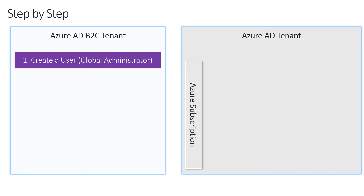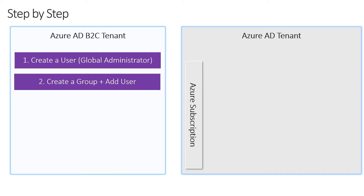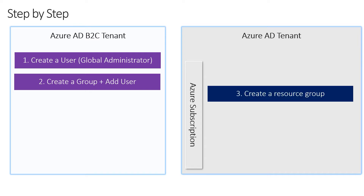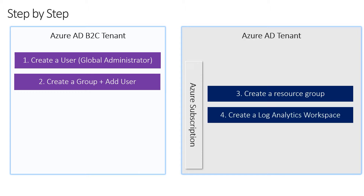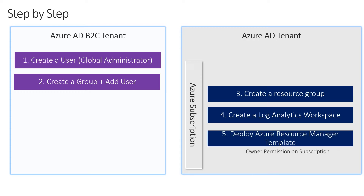To begin with, you create or repurpose a user account, assign it a global administrator role, then create a group and assign that user to it. Next, within the Azure subscription, you will create a resource group, create a log analytics workspace, and then deploy an ARM template, also known as Azure Resource Manager template. In order to complete this step, you need to have Azure owner permissions on the subscription.